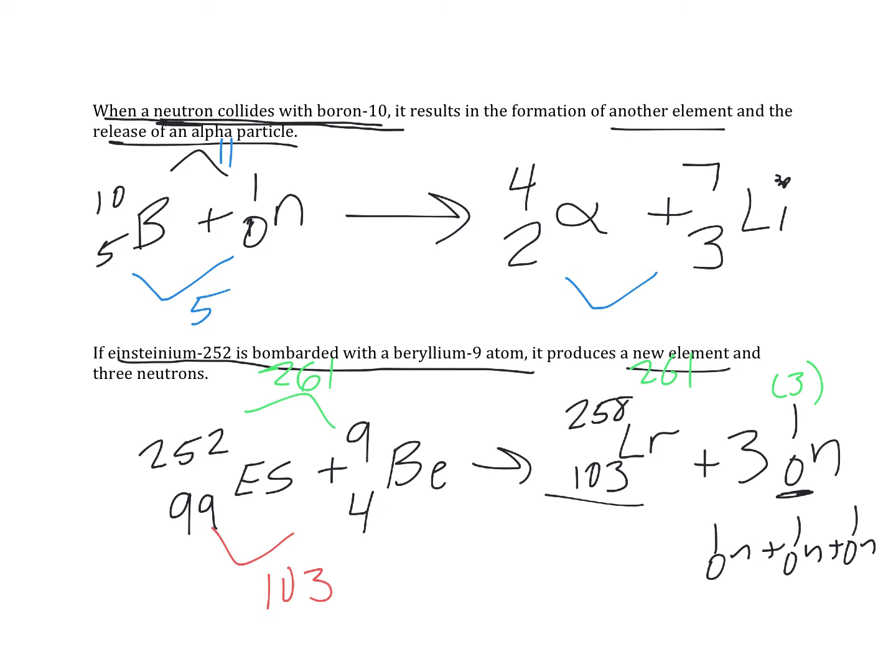252 plus nine is 261. 258 plus one plus one plus one is also 261. So this is how you write nuclear reactions. Just take some practice to get used to. The big thing is remember your arrow is an equal sign and everything on each side of it, both the top and the bottom line, need to be equal on either side of the arrow. And that is it. So until next time, I am Derek Chenova. Have a delightful day.